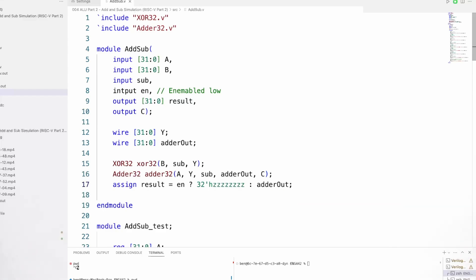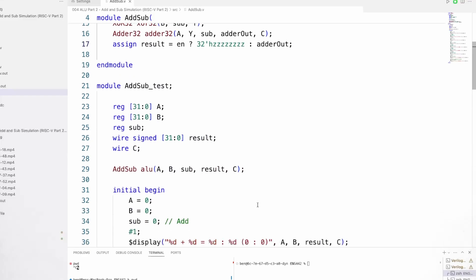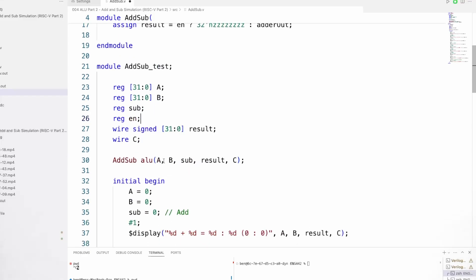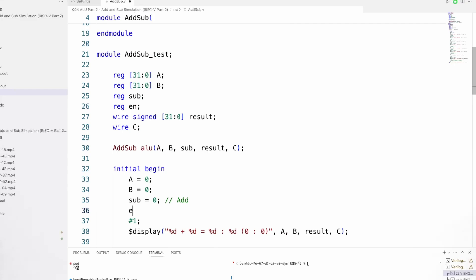So now when we set the enable low, we'll get the adder output. When we set it high, it will disable this output and allow us to drive that result signal from a different module. I'll just stick that into our test bench here. I'll add the enable signal and I'll just turn it on. And then we'll run again to make sure that that's outputting correctly.